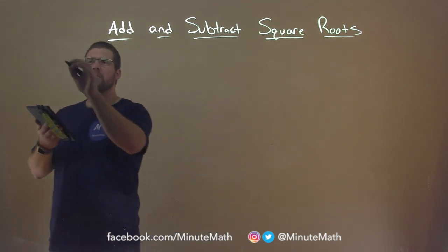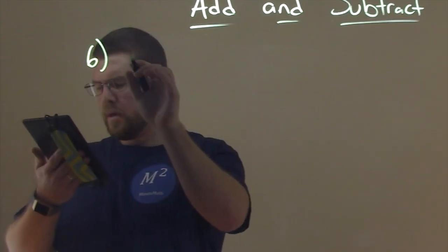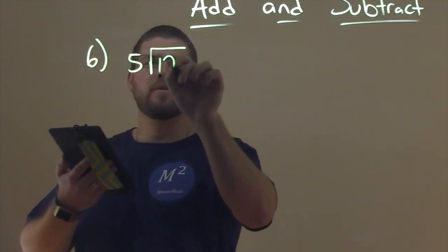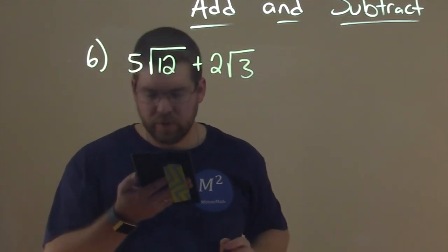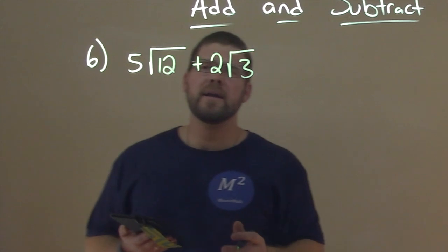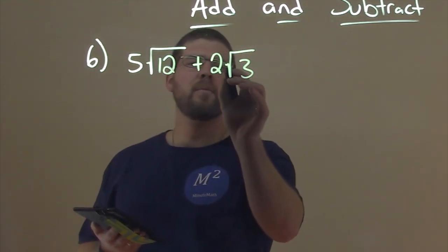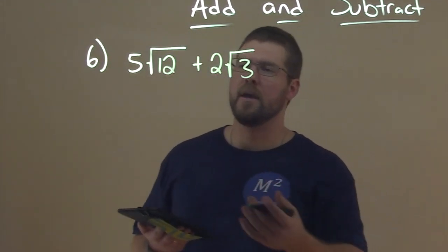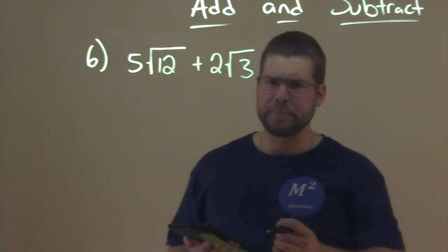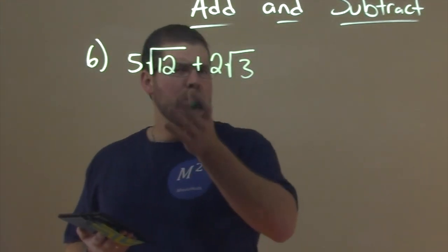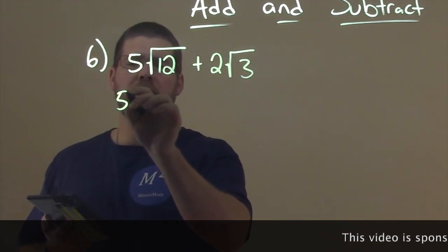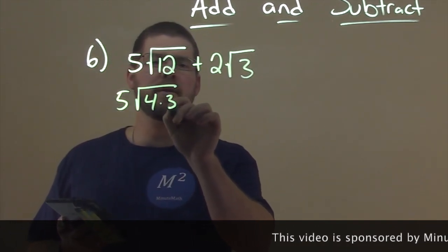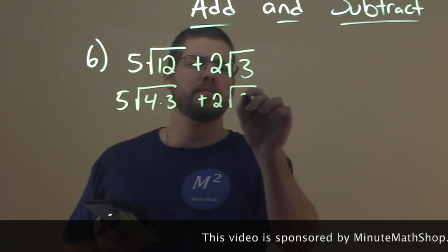So let's just go with an example for addition. Say I was given 5 times the square root of 12 plus 2 square root of 3. Right now we can clearly see that the numbers inside the square root are not the same, 12 and 3. But I can maybe manipulate 12, we can simplify that. We know that's 5 times the square root of 4 times 3 plus 2 square root of 3.